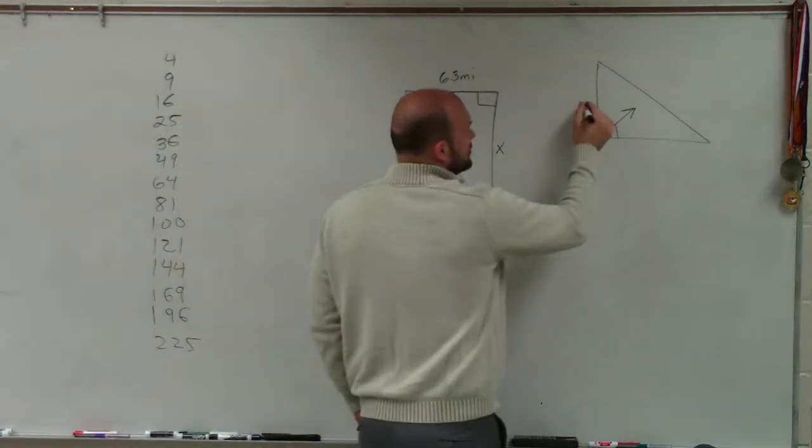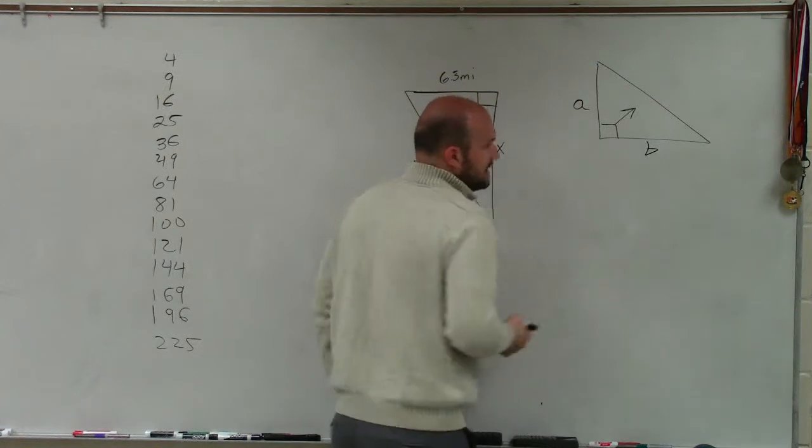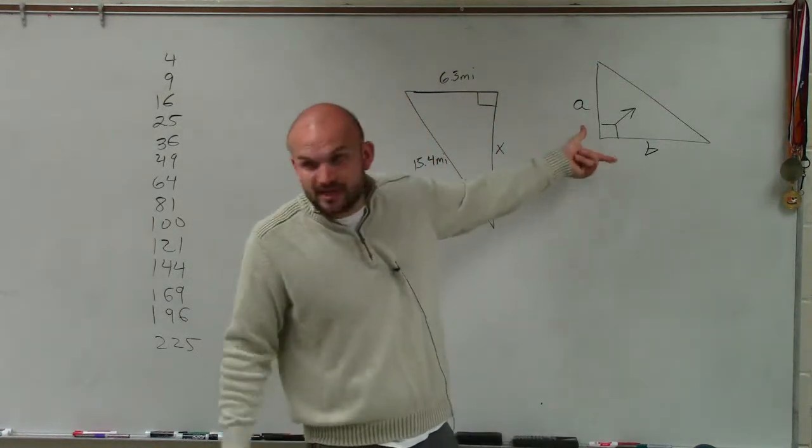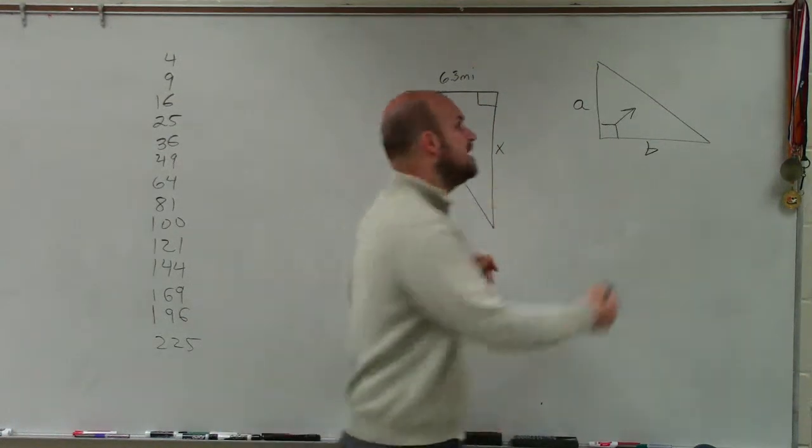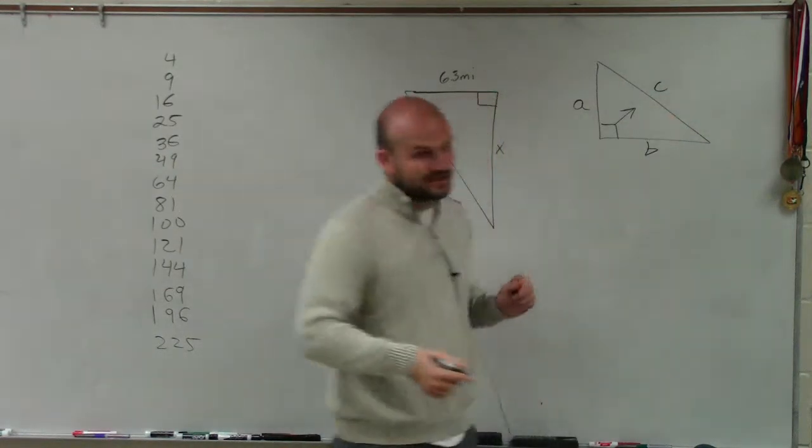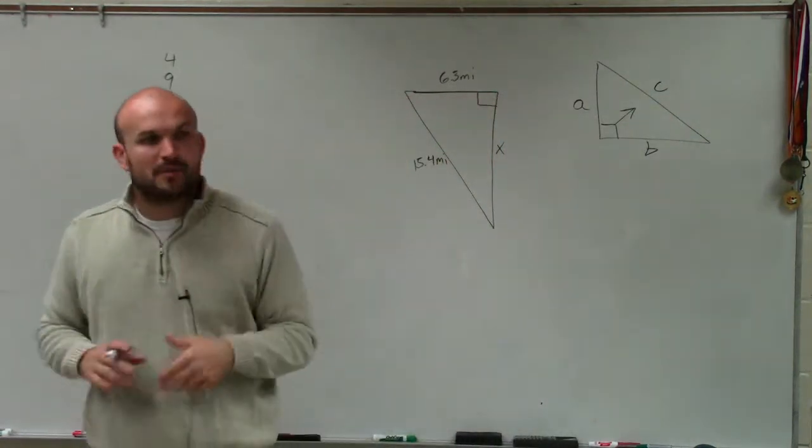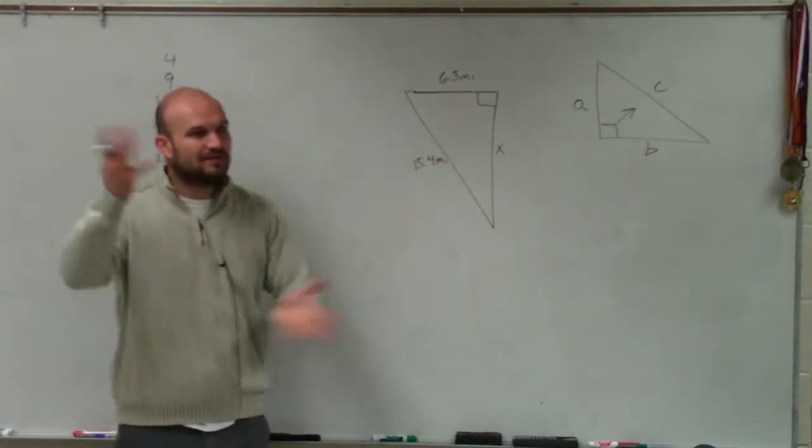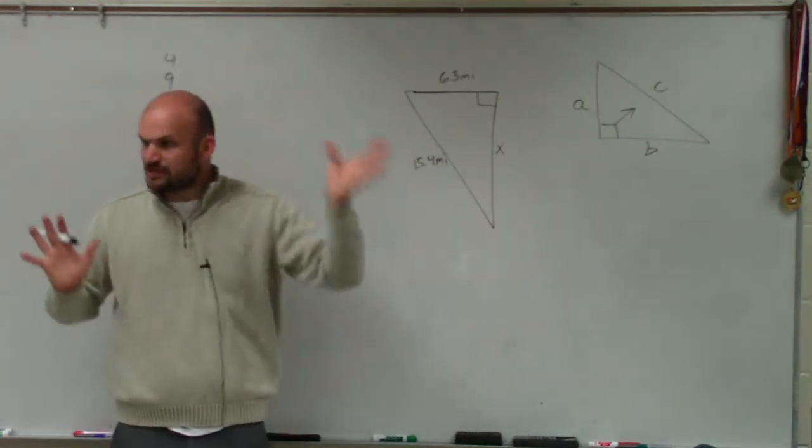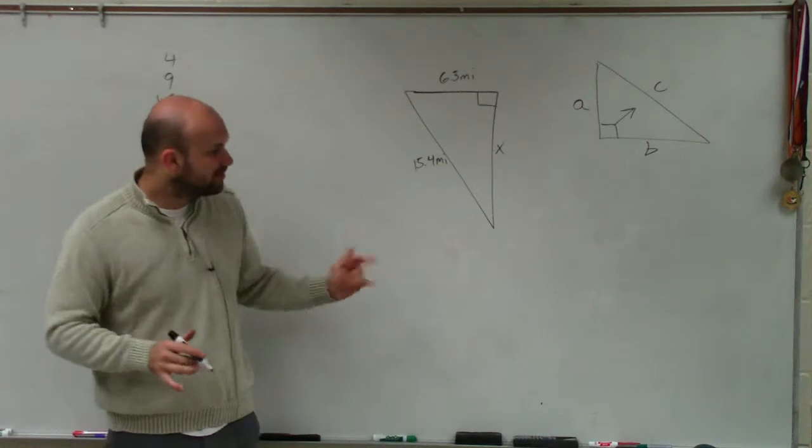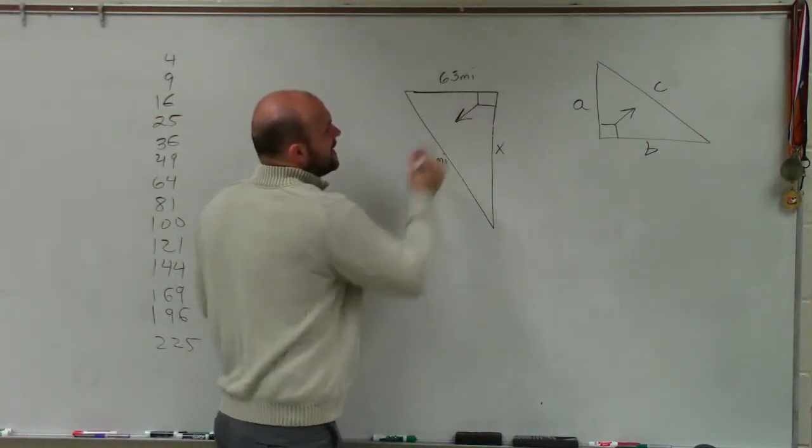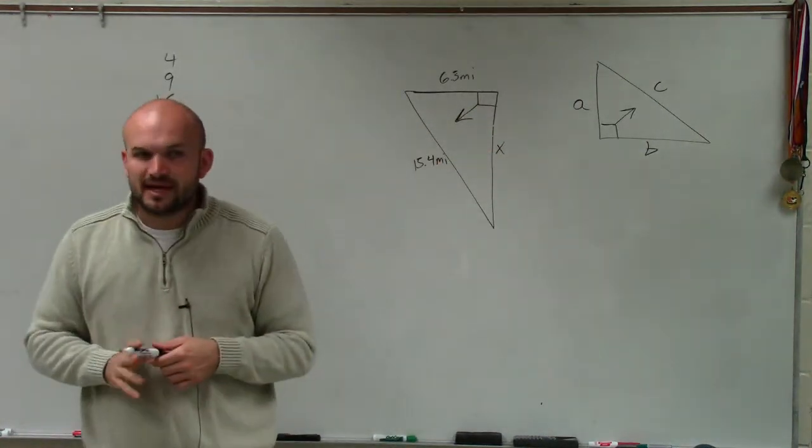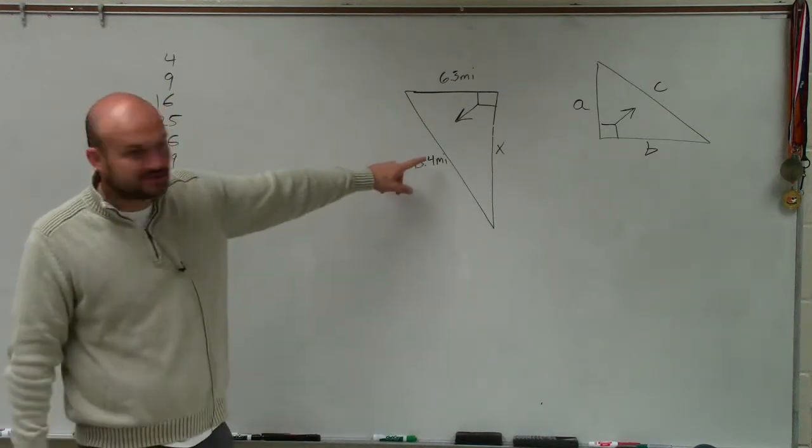The first two is what we call the legs, A and B. Notice how A and B create your right triangle. And then C, what we call our hypotenuse, is directly across from our right angle. So you guys can see on your worksheet, you have triangles that are mixed around in all different directions. But what's important about this is, since we have our right angle, we can determine what's going to be the legs and what's going to be the hypotenuse.